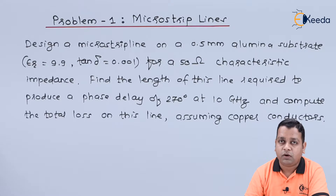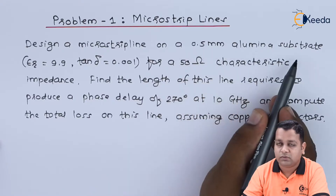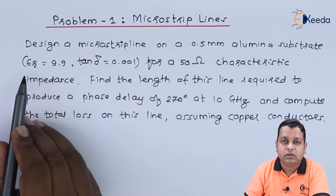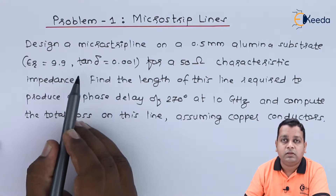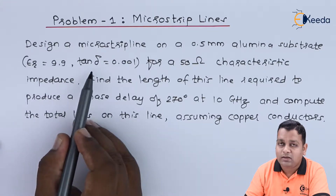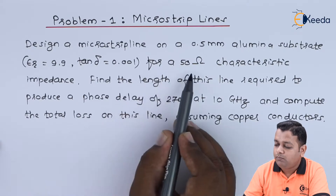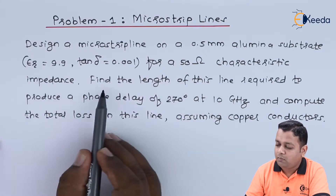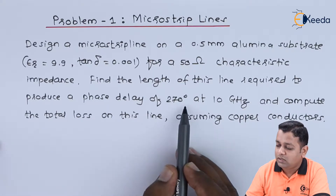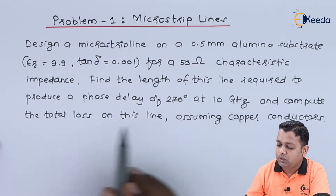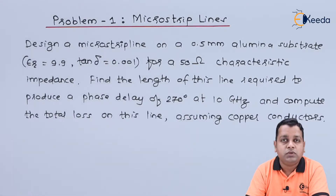Here we have a problem statement: Design a microstrip line on a 0.5 mm alumina substrate. For the alumina substrate, the relative dielectric constant epsilon r is equal to 9.9, whereas the loss tangent, represented as tan delta, is given with the value 0.001. This is for a 50 ohm characteristic impedance. Find the length of this transmission line required to produce a phase delay of 270 degrees at 10 GHz, and compute the total loss on this transmission line assuming copper conductors.